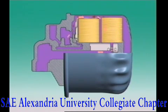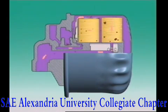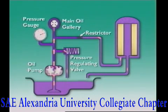Diesel engines produce more carbon particles than petrol engines, so the oil filter can have a full flow element to trap larger impurities and a bypass element to collect sludge and carbon soot. In a bypass system, the bypass element filters only some of the oil from the pump.